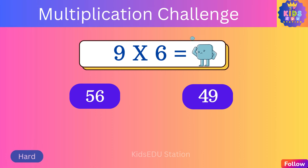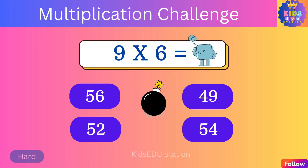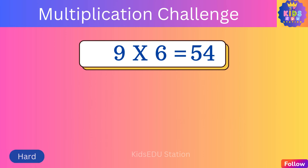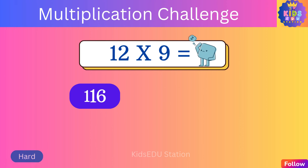Fifty-six, forty-nine, fifty-two, fifty-four. Nine times six is fifty-four. What is twelve times nine?